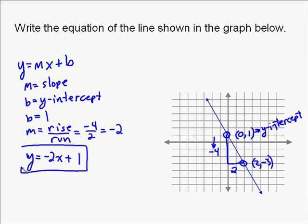In this particular problem, our answer is y equals negative 2x plus 1, because as we pointed out, the y-intercept is the point 0 comma 1. And you can see that because it crosses the y-axis, or the x-axis, right at that point.